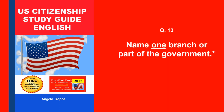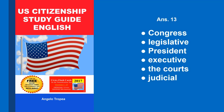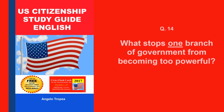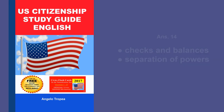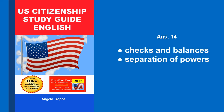Name one branch or part of the government. Congress, legislative, president, executive, the courts, judicial. What stops one branch of government from becoming too powerful? Checks and balances. Separation of powers.